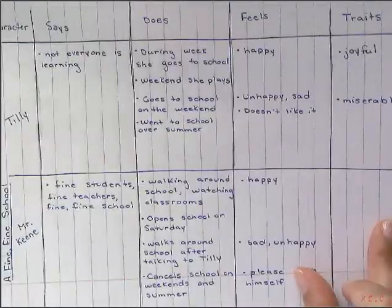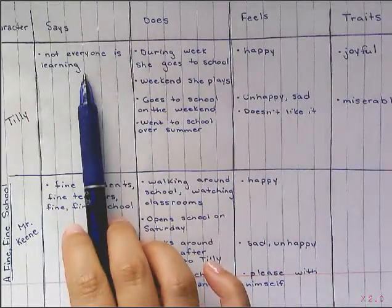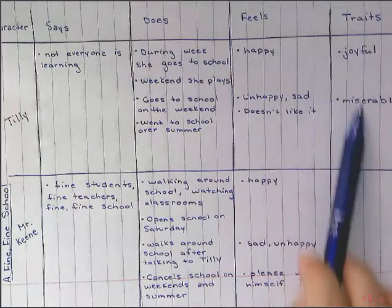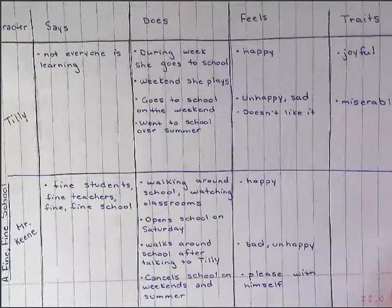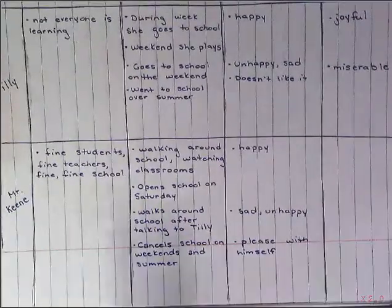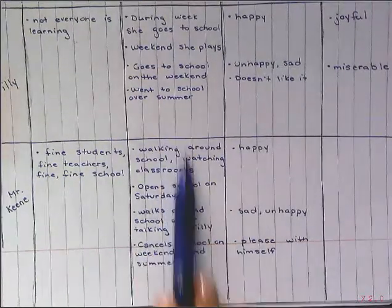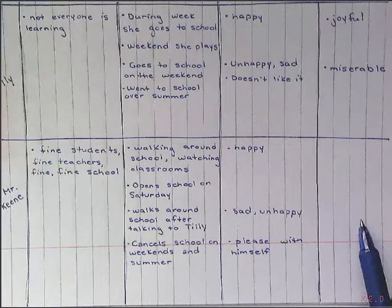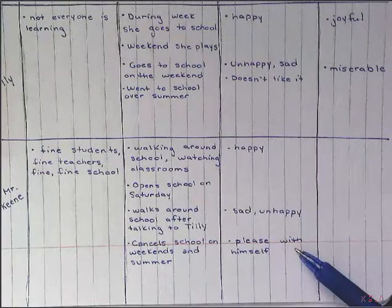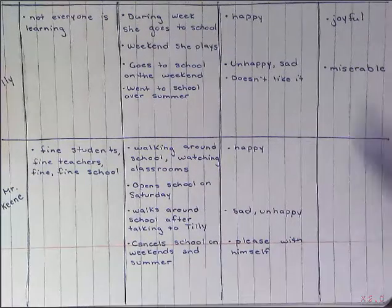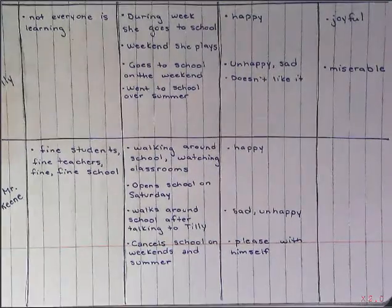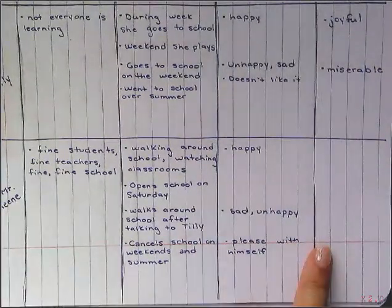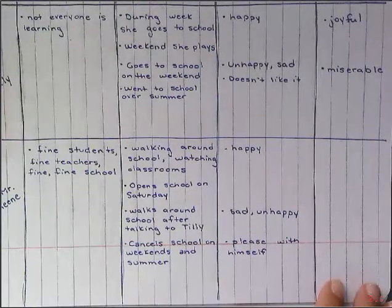Did you see how I used the information I already had — what my character was saying, doing, and feeling throughout the story — and put all those together to come up with her character traits? Now I want you to do the same thing for Mr. Keen. Read back through your chart: what Mr. Keen is saying, what Mr. Keen is doing, how Mr. Keen is feeling, and come up with some character traits for him. He felt different at different times in the story, so Mr. Keen, just like Tilly, is going to end up having more than one character trait. When you are finished, you are going to submit this chart to me today in Canvas. Thank you.